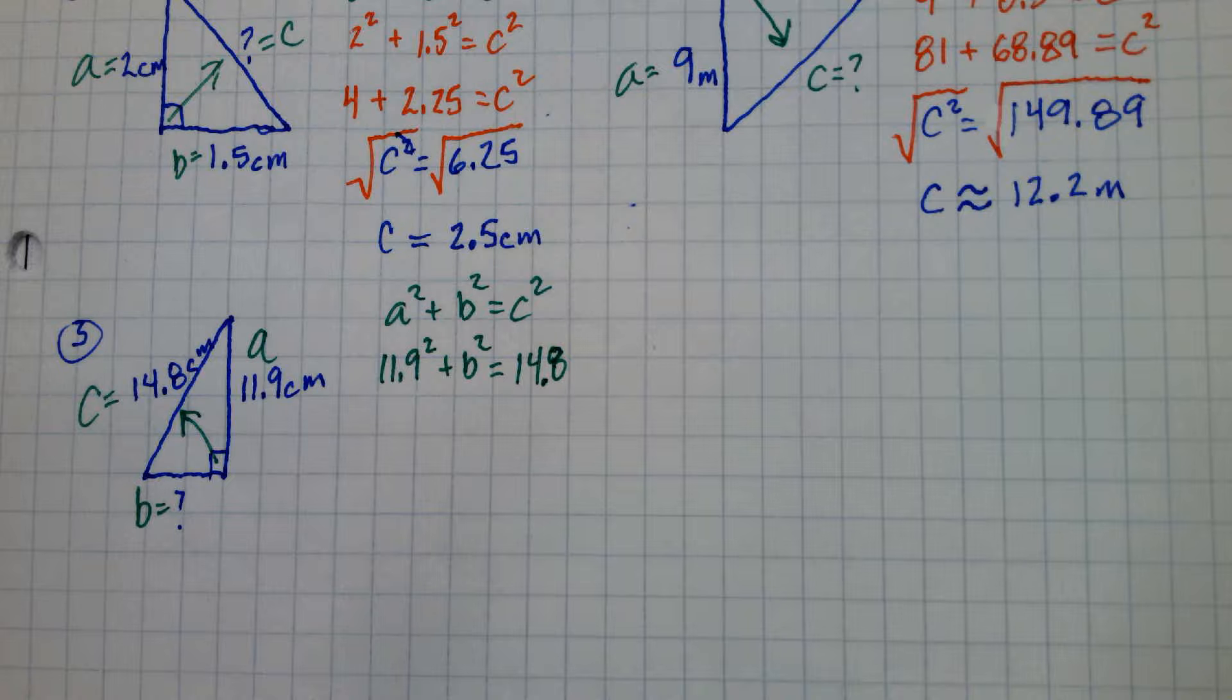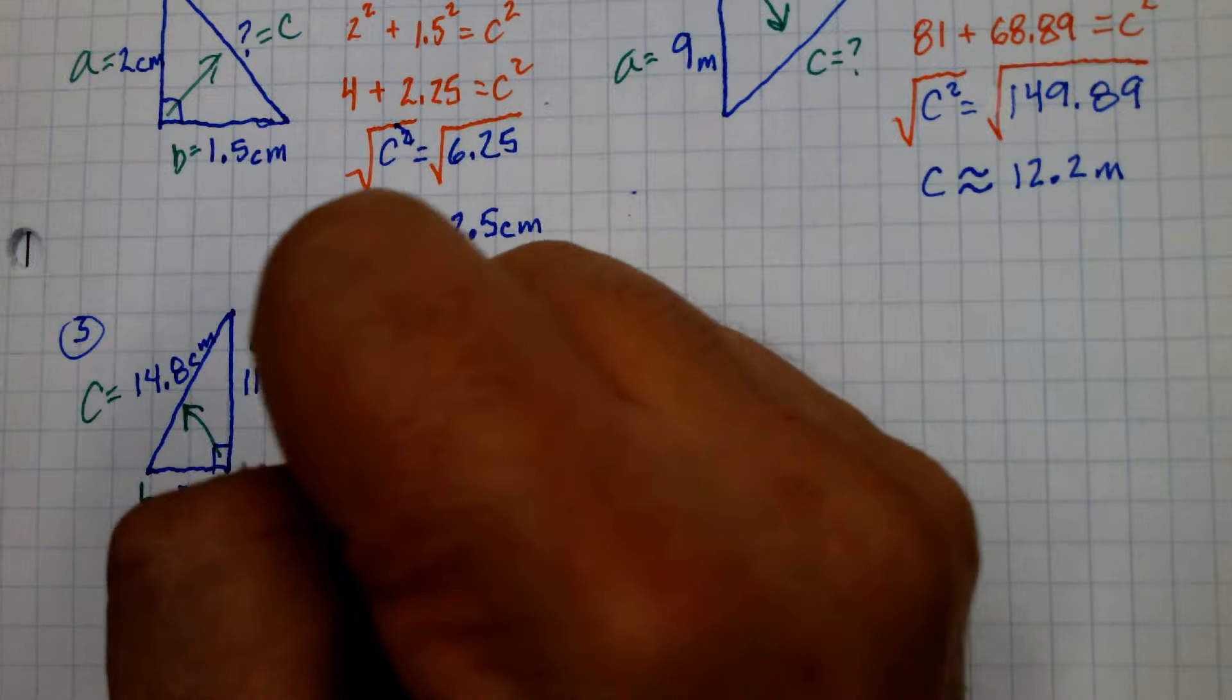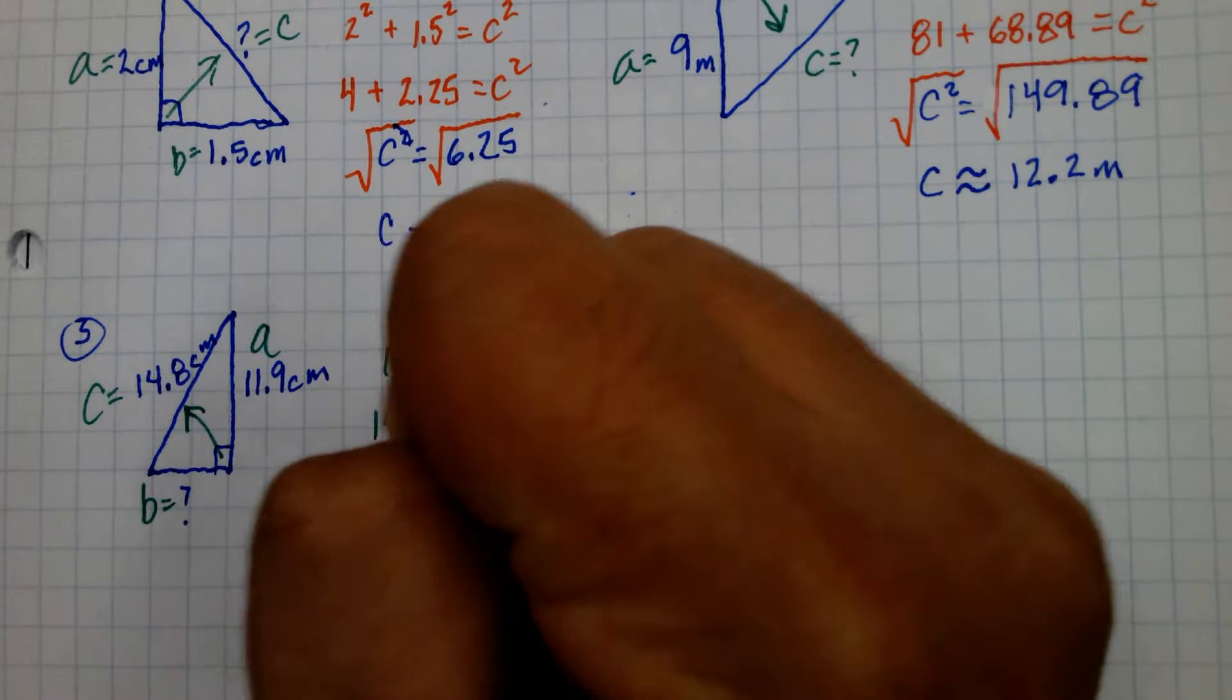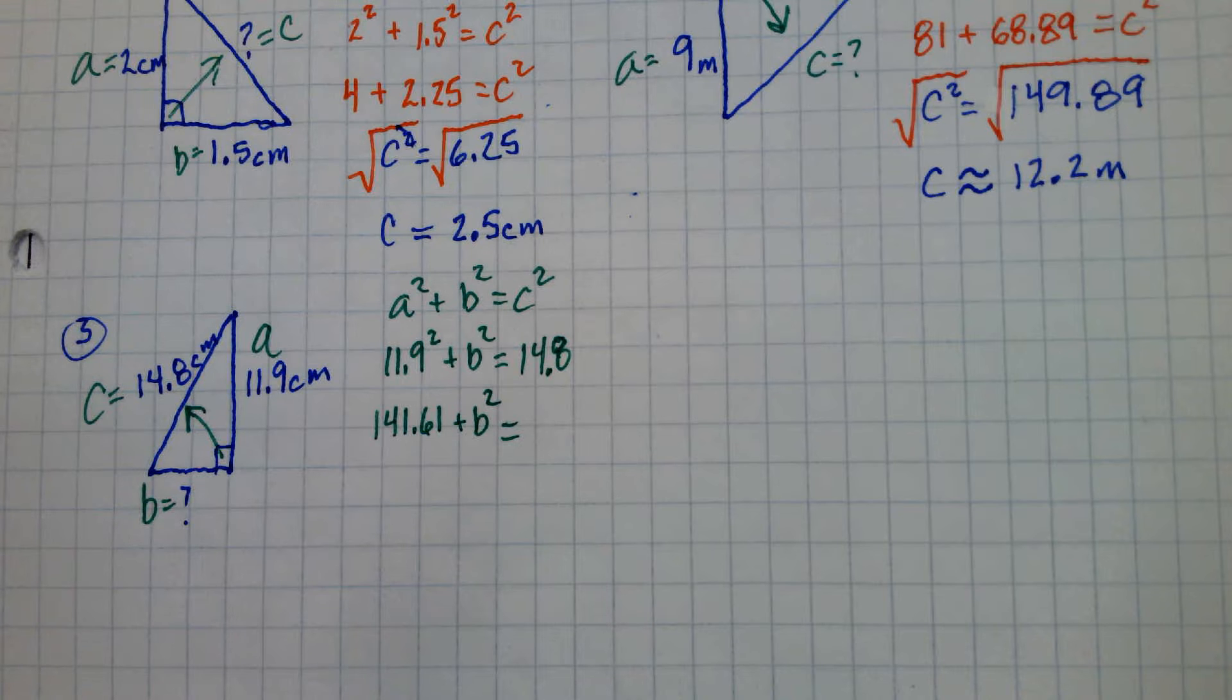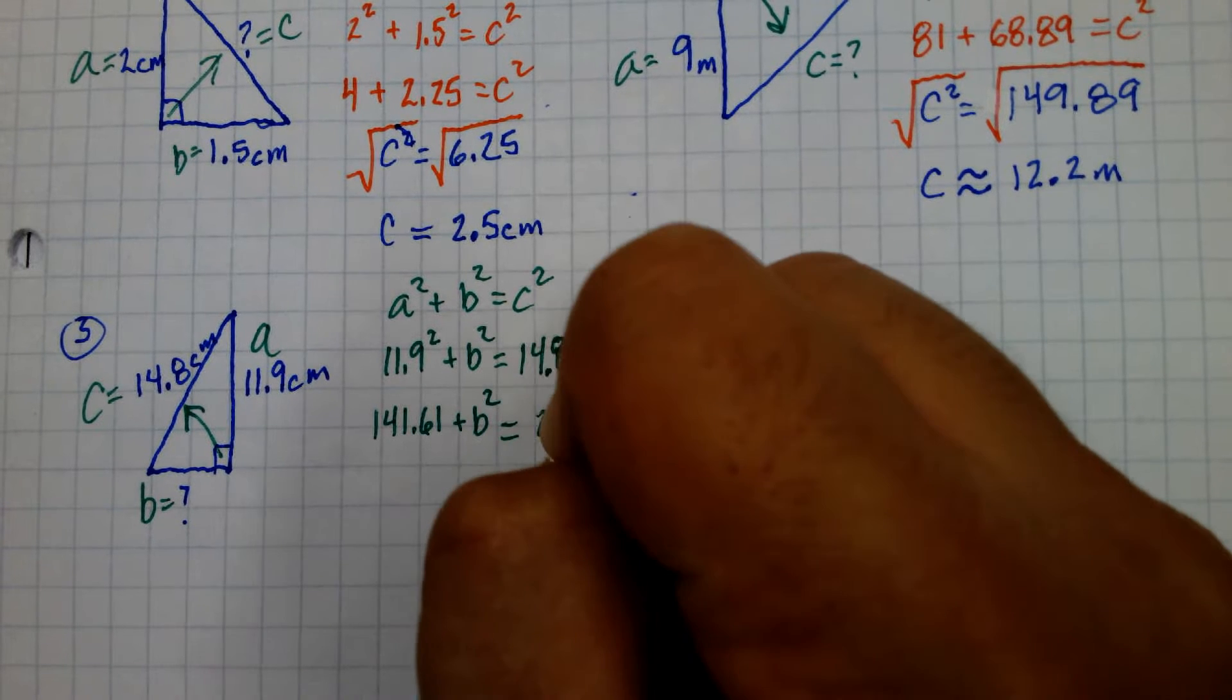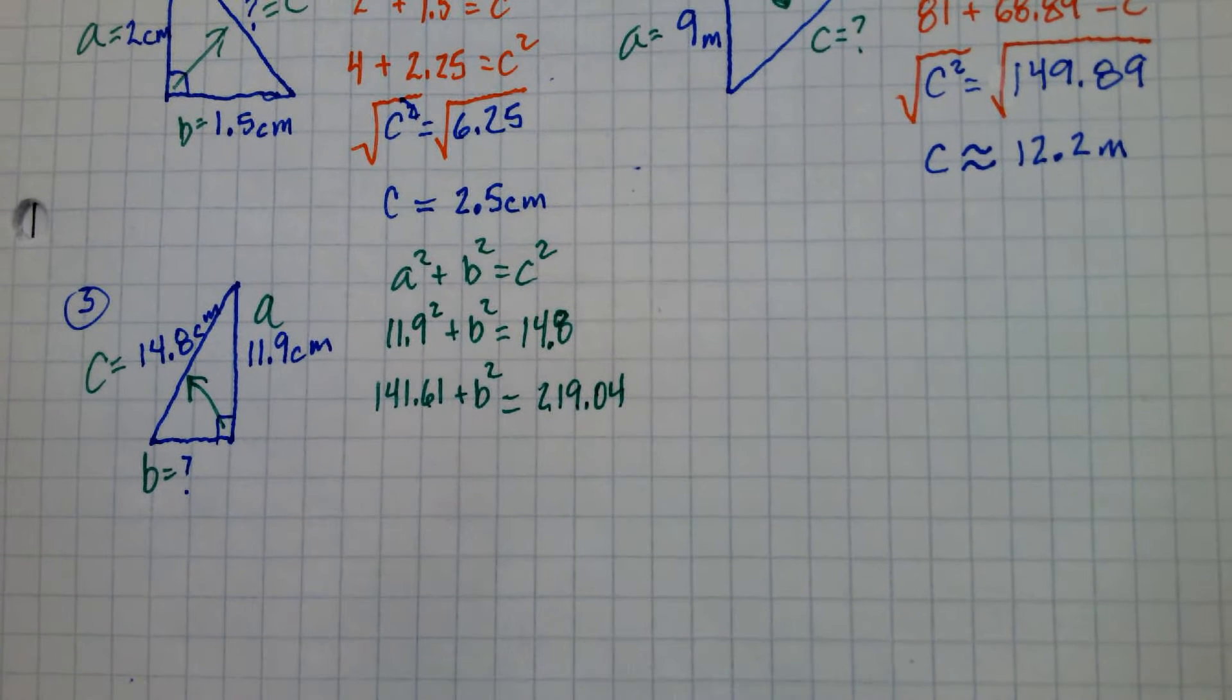And let's just figure those out. 11.9 squared I got 141.61 plus B squared equals 14.8 squared, 219.04. Don't do the rounding to the end. So leave those as is.